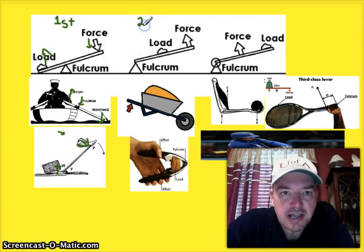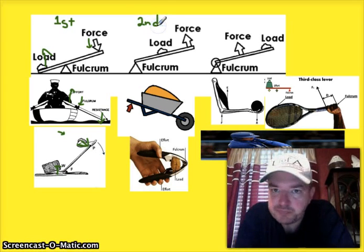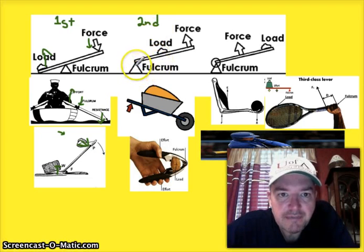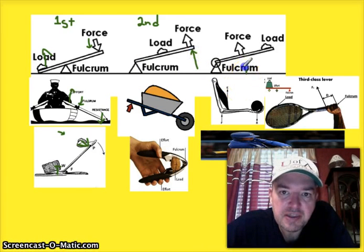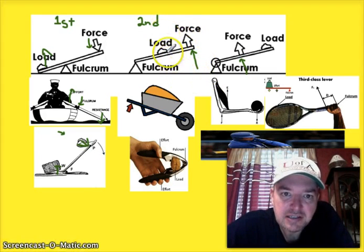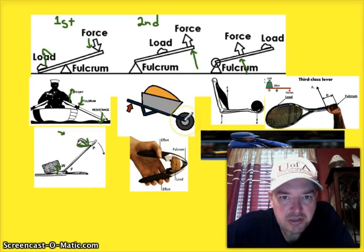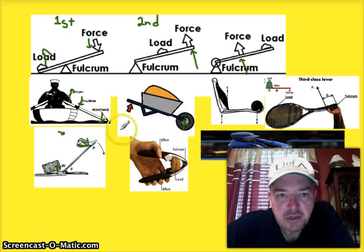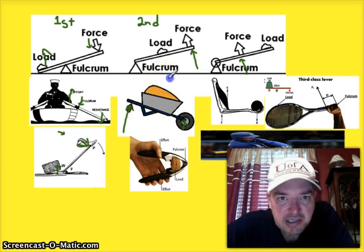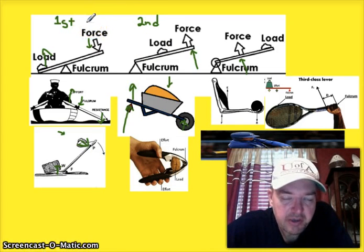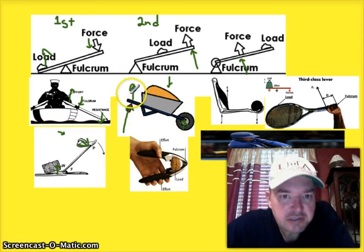A second class lever has the fulcrum at the end. You use your force to lift up the lever, and in lifting it you can lift things more easily. A wheelbarrow is a good example: the fulcrum is at the wheel end, you lift this heavy load, the load is in the middle, and the force is on the outside. It's a practical use of a long lever-like object.